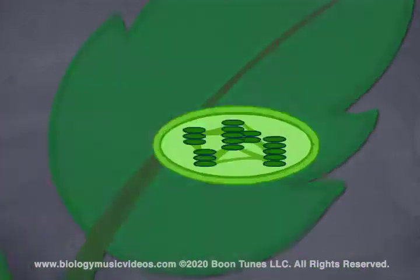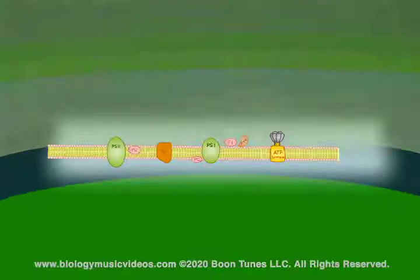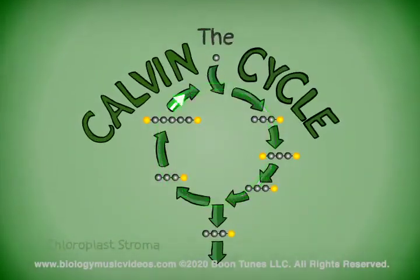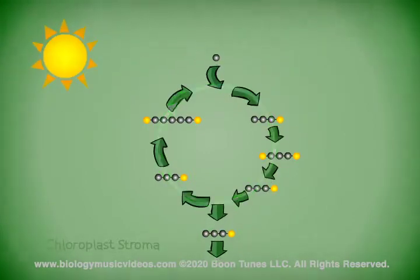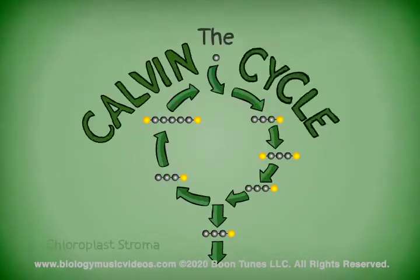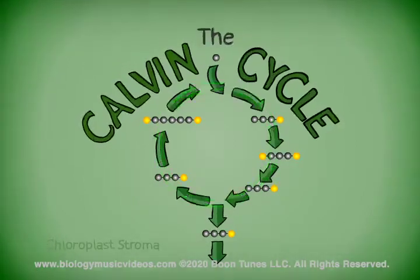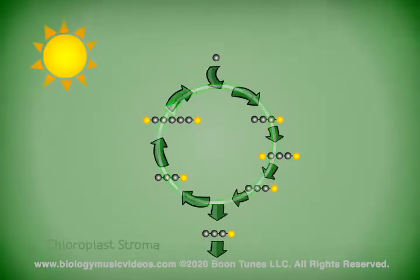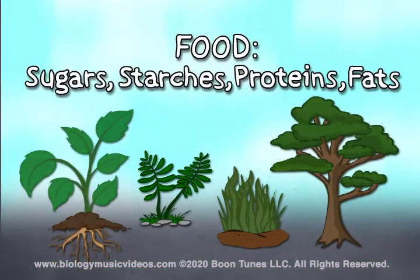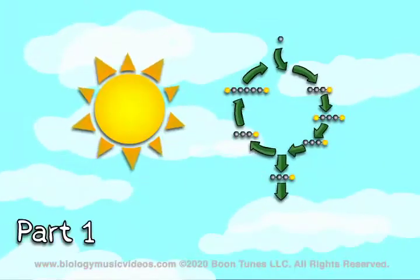Let's go! The Calvin Cycle — it spins, it spins, finishing what the life begins. The Calvin Cycle, it spins, it spins, finishing what the life begins. Plants manufacture and synthesize the food they need to stay alive. This begins with a two-part process known as photosynthesis.